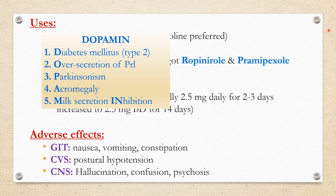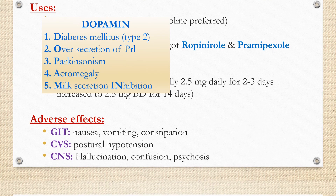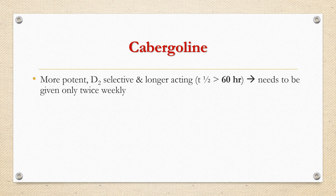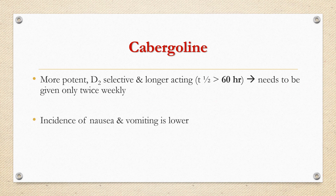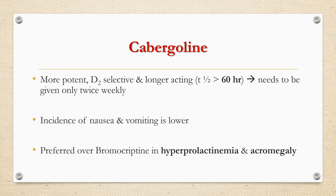Adverse effects of bromocriptine: on GIT — nausea, vomiting, and constipation; on cardiovascular system due to alpha blockade — postural hypotension; in CNS — hallucination, confusion, and psychosis on long-term use. Cabergoline is a more potent D2-selective agonist compared to bromocriptine and is longer-acting, with half-life more than 60 hours, so it needs to be given only twice weekly. Incidence of nausea and vomiting are also lower with cabergoline. Cabergoline is preferred over bromocriptine in hyperprolactinemia and acromegaly; but in acromegaly due to pituitary adenoma, its efficacy is lower than octreotide, though cabergoline may be used to supplement octreotide, surgery, or radiation.